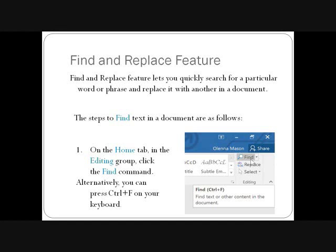Find and replace feature lets you quickly search for a particular word or phrase and replace it with another in a document. At times, you may discover that you have made a mistake repeatedly throughout your document, such as a spelling mistake of a person's name, or that you need to exchange a particular word or phrase for another. You can use Word's find and replace feature to quickly make revisions, meaning to quickly change the text.